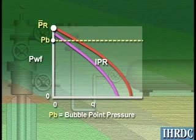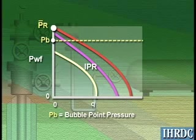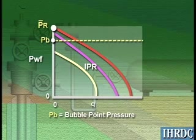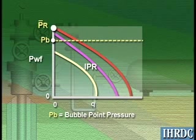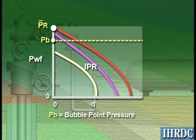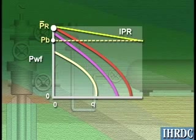Reservoirs with other drive mechanisms, such as water drive, gas cap expansion, gravity segregation, or a combination of mechanisms, will have IPR curves of a different shape, or perhaps a straight line.